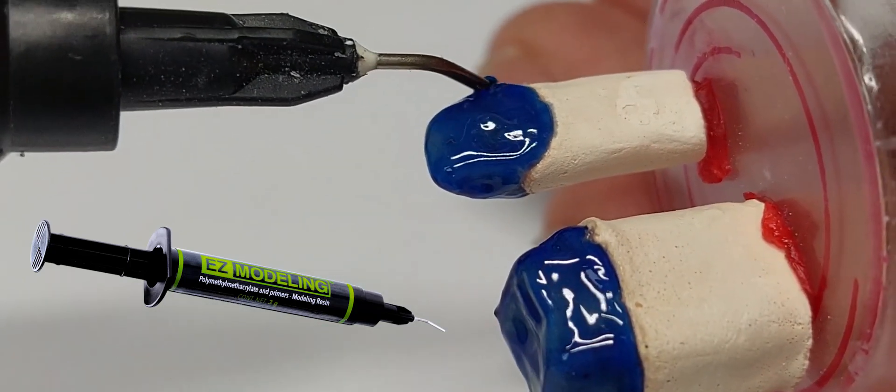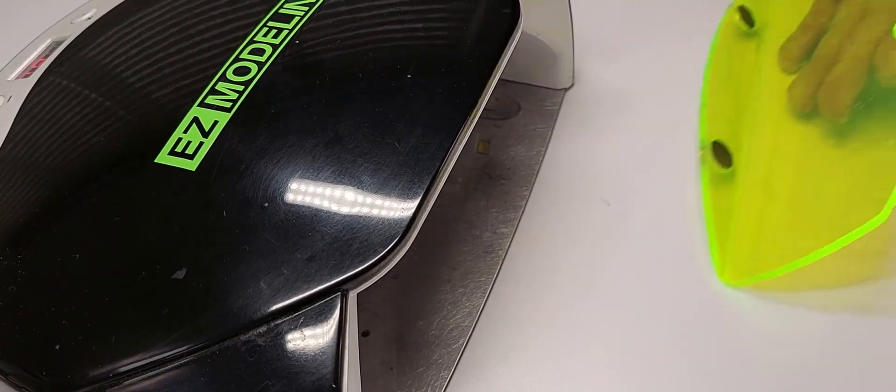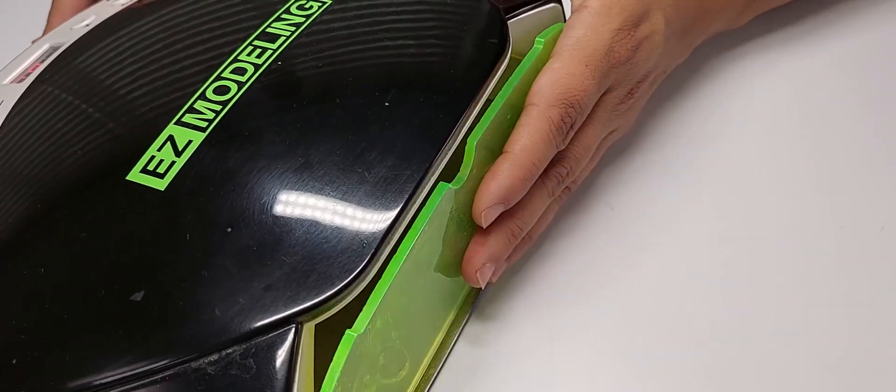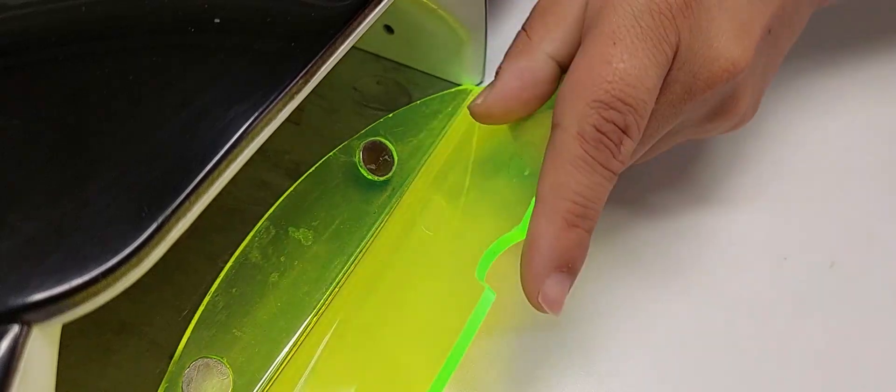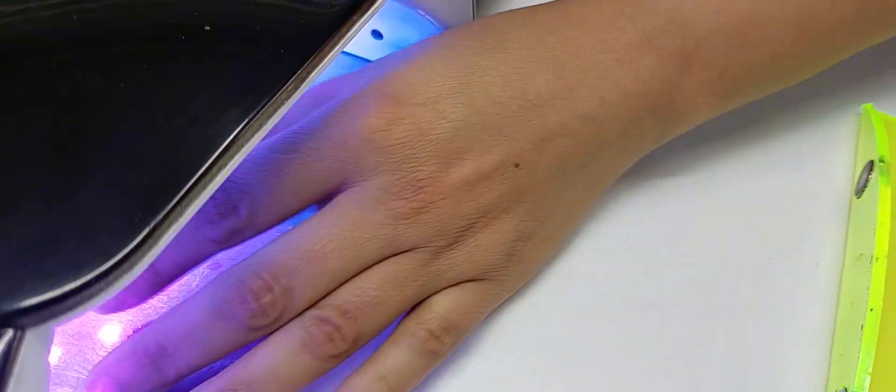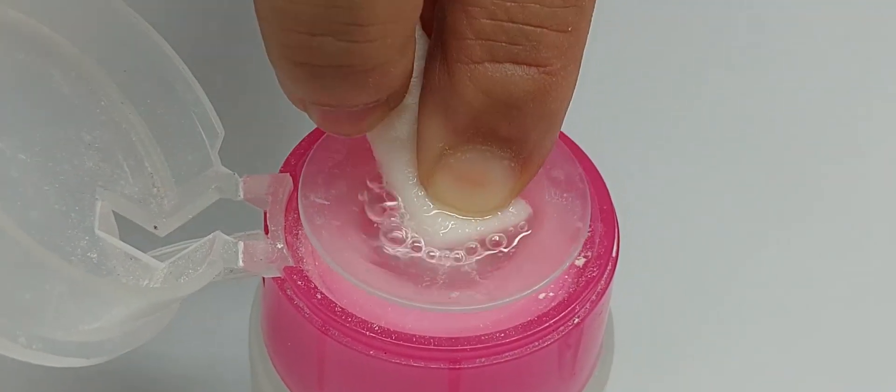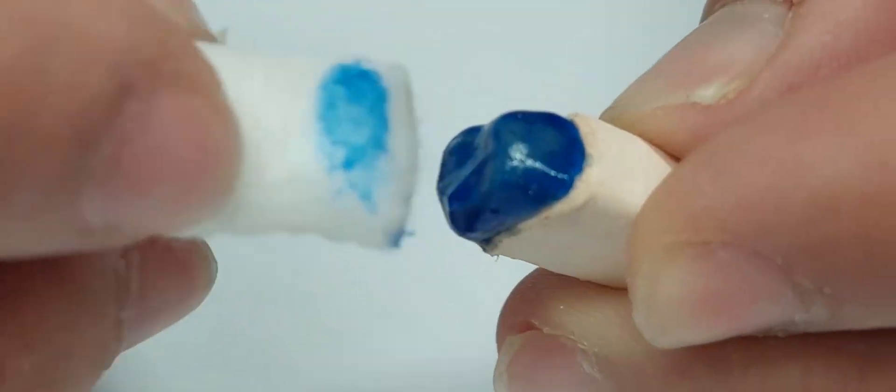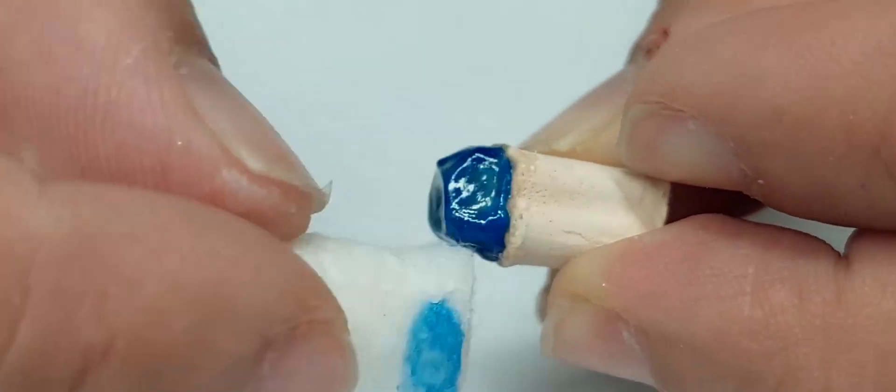Once you have your copings, put them into your lighting source and photopolymerize them. They will be ready in 60 seconds. After cleaning them with liquid acrylic, you will be able to appreciate their exceptional precision.